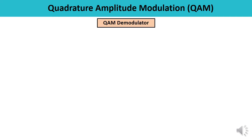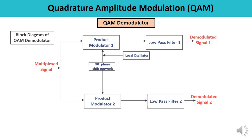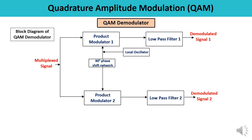Now let us talk about the QAM demodulator — how to draw the QAM demodulator so that we can get the original signal back. This is the block diagram of a QAM demodulator. The input is the multiplexed QAM signal, and from this signal we have to extract the original signals: signal one and signal two. Here also there are two product modulators, two low pass filters, a local oscillator, and a 90-degree phase shift network. The QAM signal is forwarded to two points: point one in the upper section and point two in the lower section.